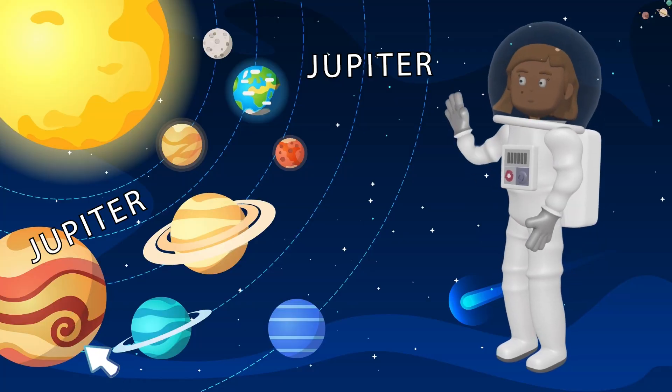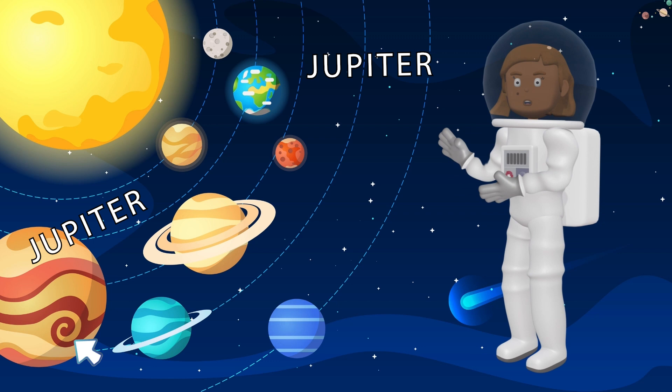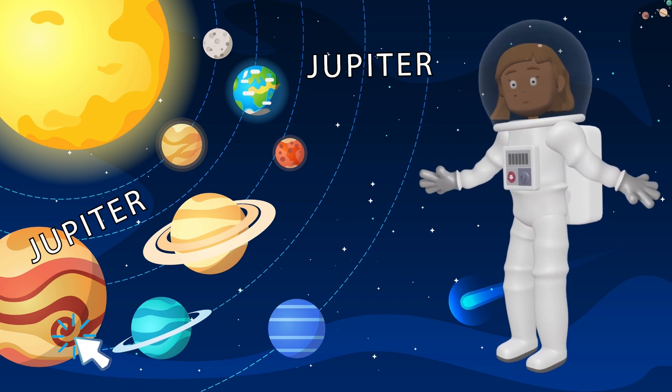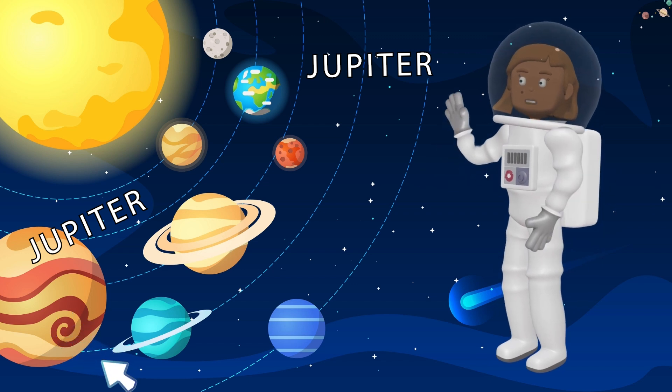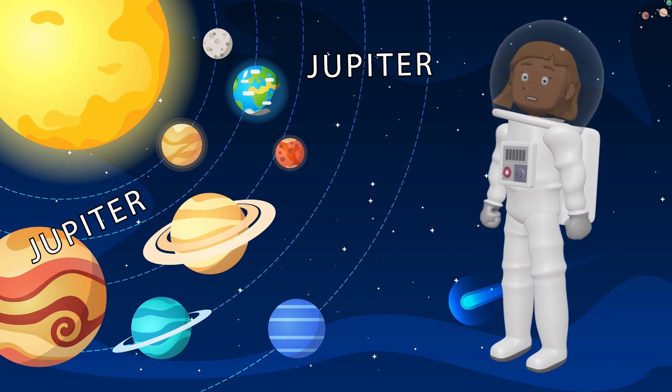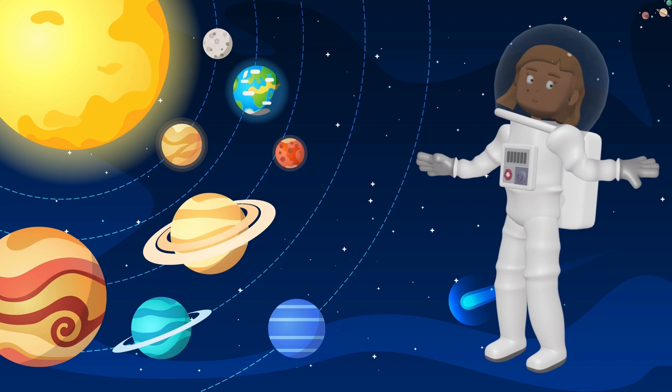Hold on tight, because we're approaching the giant of our solar system, Jupiter! Jupiter is so big, it could fit all the other planets inside it! Its most famous feature is the Great Red Spot, a massive storm that's been raging for hundreds of years! It's like a giant hurricane! Jupiter has at least 79 moons orbiting around it! The largest one, Ganymede, is even bigger than the planet Mercury! Imagine having that many moons lighting up your night sky!